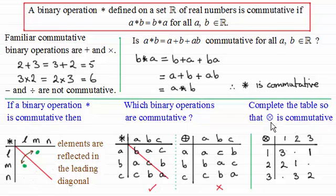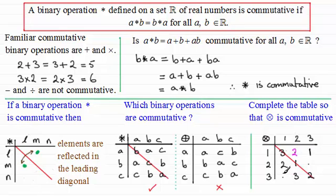Now there's one more example where you're asked to complete the table so that the binary operation is commutative. There are three elements to fill in. If it's commutative, we expect a reflection in the leading diagonal: the first missing element is a reflection of two, so it's two; the second is a reflection of one, so it's one; and the third is a reflection of three, so it's three. I hope that gives you a good idea of commutativity for a binary operation.